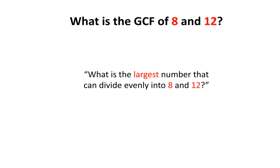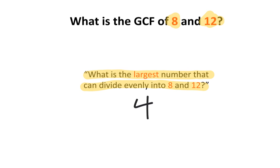I want to know: what is the greatest common factor of 8 and 12? In other words, what is the largest number that can divide evenly into 8 and 12? Using mental math and your times tables, some of you may find the GCF to be 4, since 4 is the largest number that can divide evenly into 8 and 12.